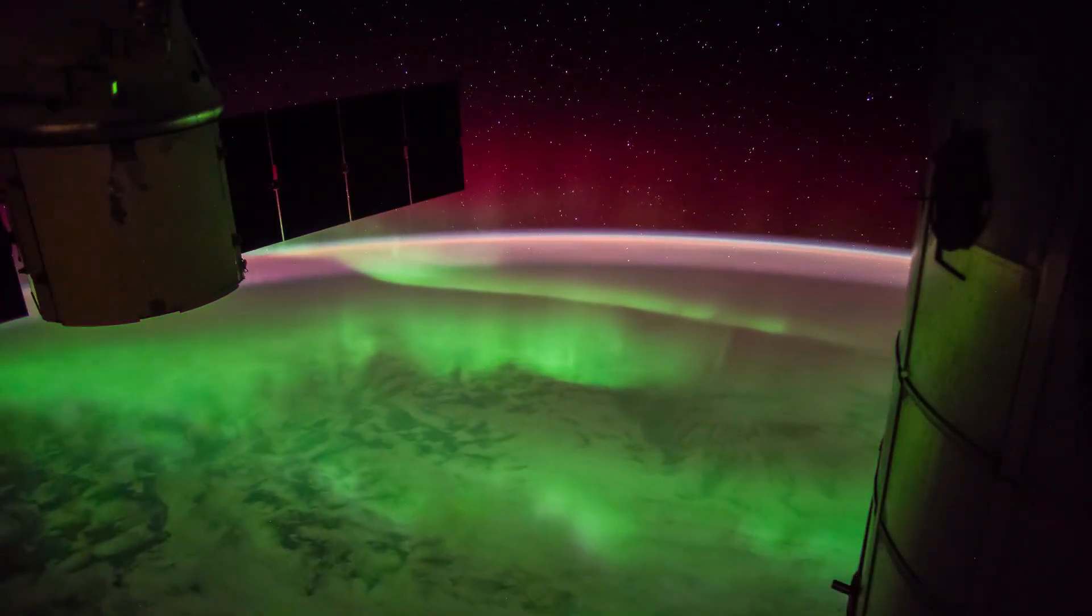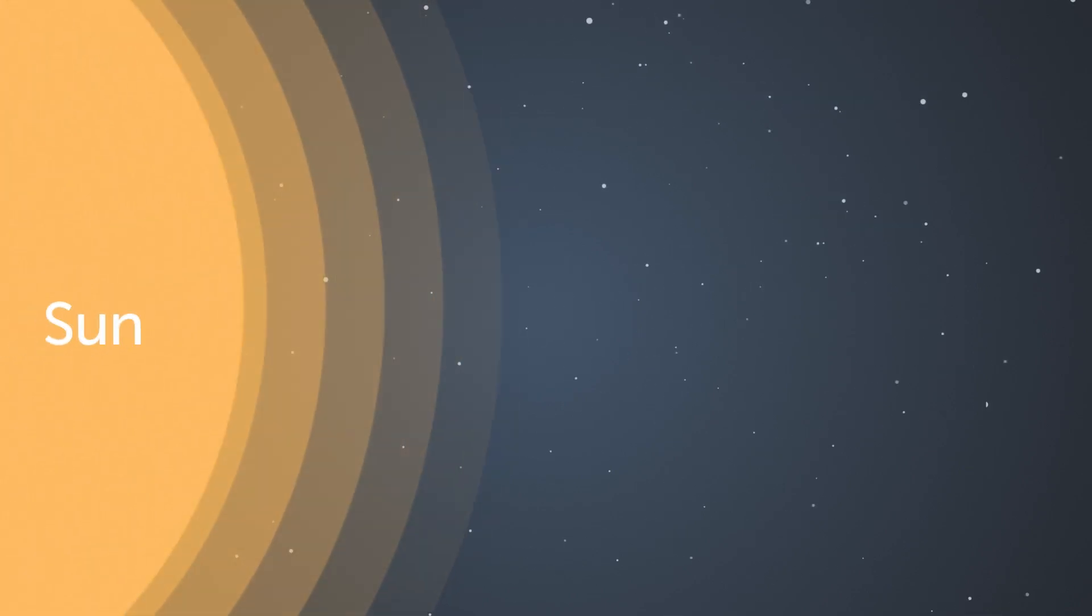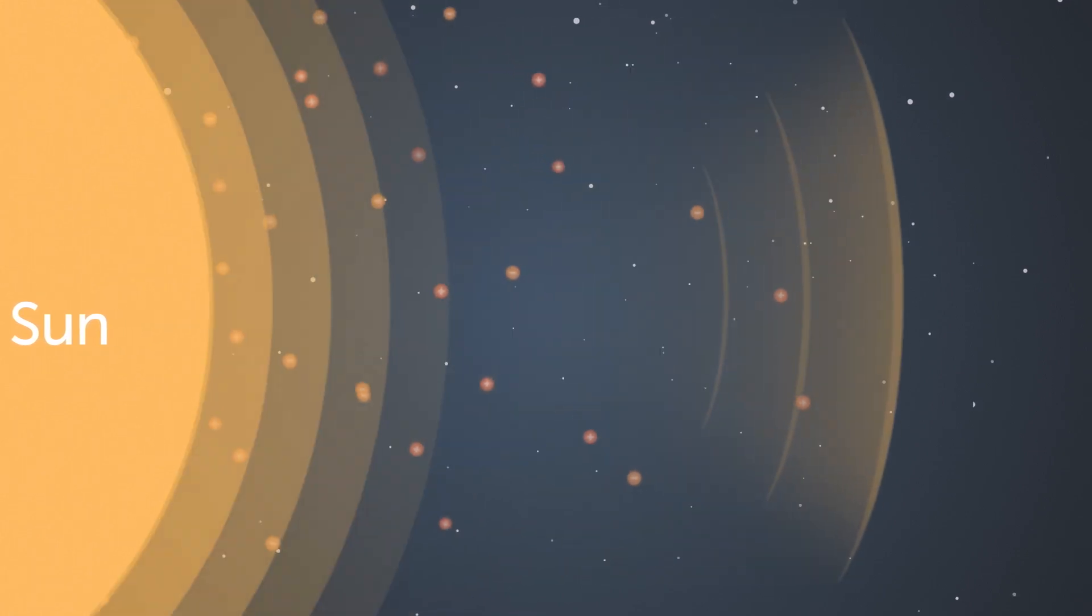Auroras are the result of events that begin on the sun millions of kilometres away from the earth. The sun is so hot that high-energy plasma electrons and protons can escape from the sun's gravitational field and this is what's called the solar wind.